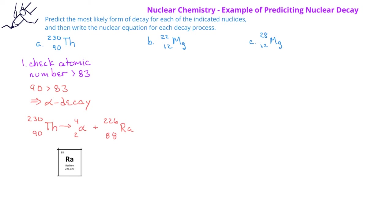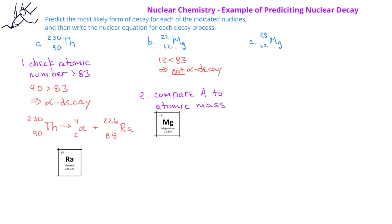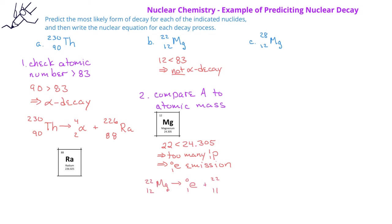In the second example, we have magnesium-22. Since the atomic number is well below 83, we would not predict alpha decay. Instead, we look at the mass number, which for magnesium-22 is 22, and notice that this is less than the atomic weight of 24 on the periodic table. Since the mass number for the nuclide is less than the atomic weight, this indicates that there are too many protons in the magnesium-22 nucleus, so we would predict that magnesium-22 undergoes positron emission to turn a proton into a neutron. The nuclear equation for this would be: magnesium-22 decays to form a positron and sodium-22.